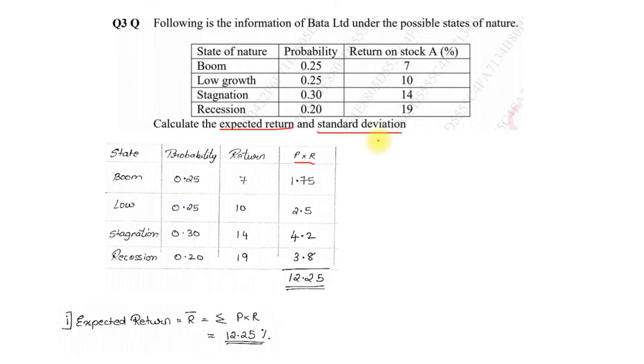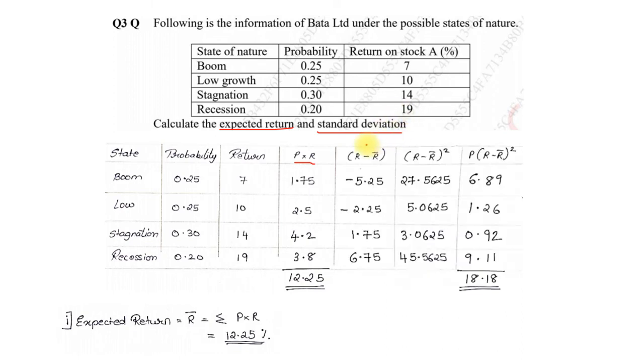Now in order to find standard deviation we will need few additional columns. The next column will be R minus R bar, that is all the values of R minus the R bar. So 7 minus 12.25, 10 minus 12.25, 14 minus 12.25 and 19 minus 12.25. The values come as negative 5.25, negative 2.25, 1.75 and 6.75. Once you get R minus R bar, the next column will be R minus R bar the whole square. So 5.25 square is 27.5625, 2.25 square is 5.0625, 1.75 square is 3.0625, 6.75 square is 45.5625.